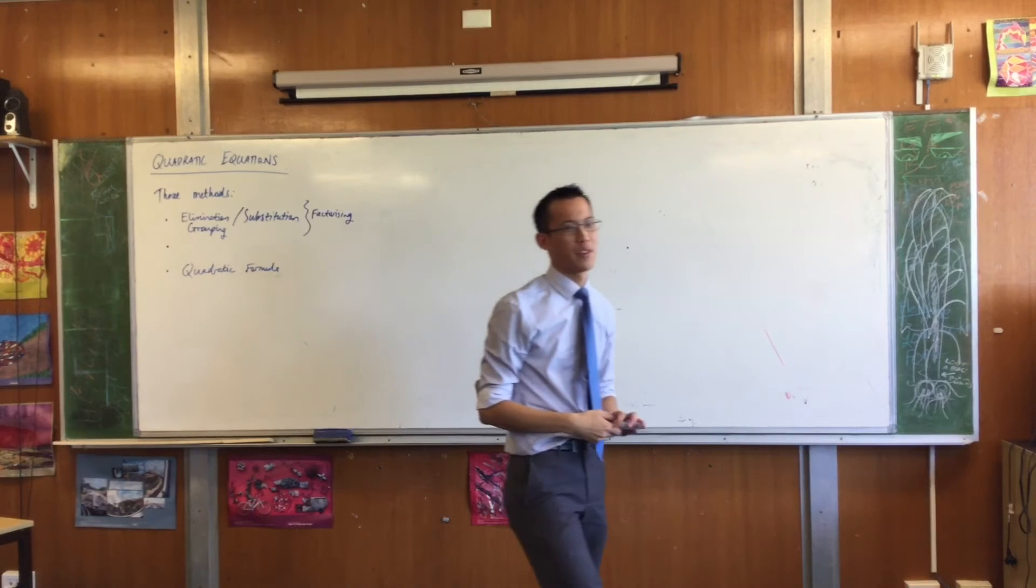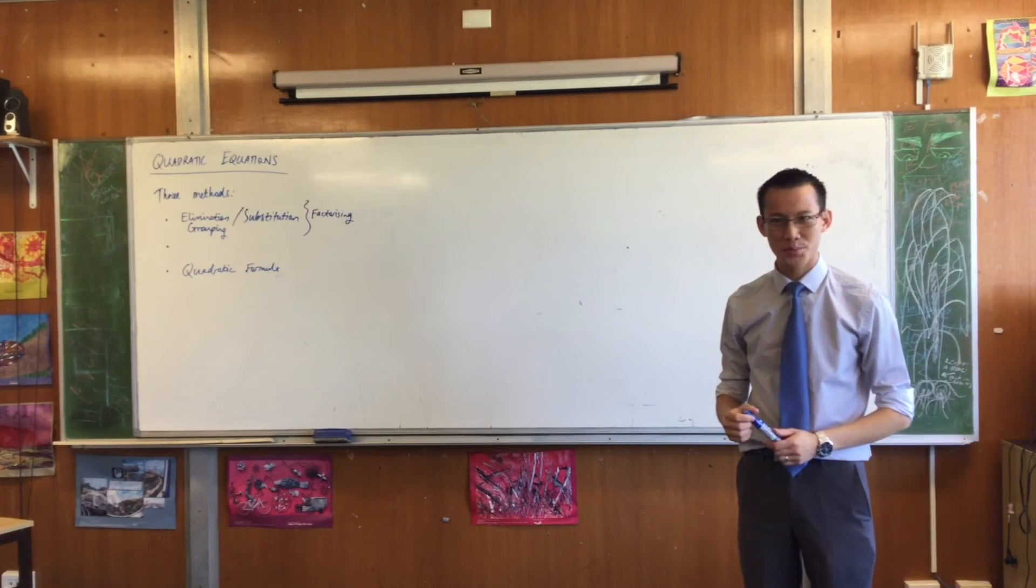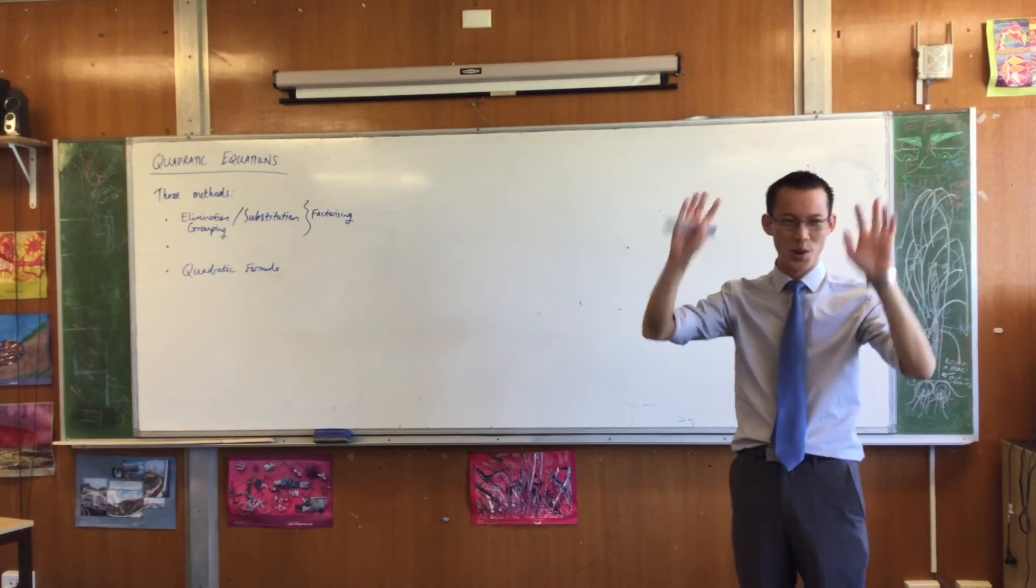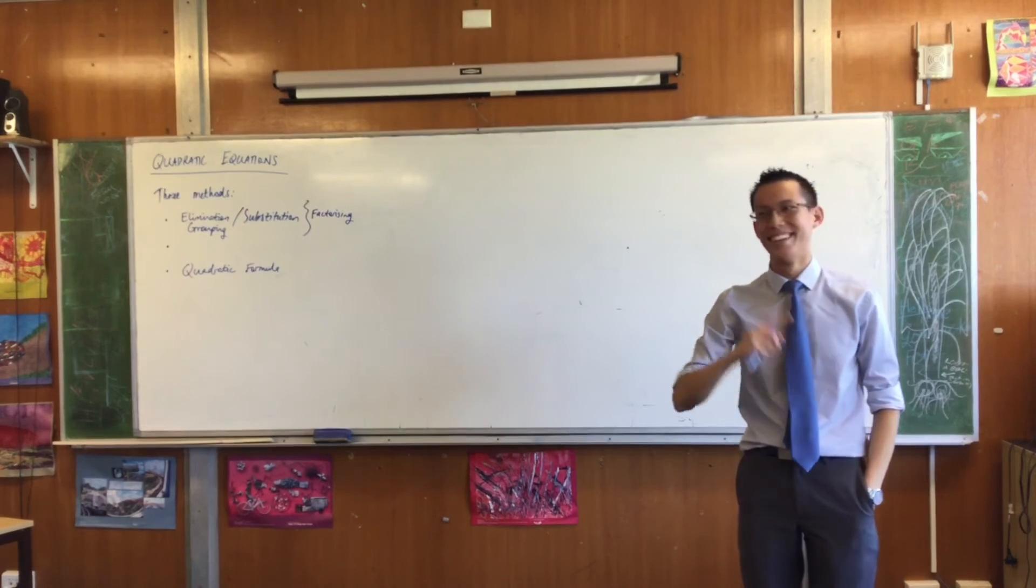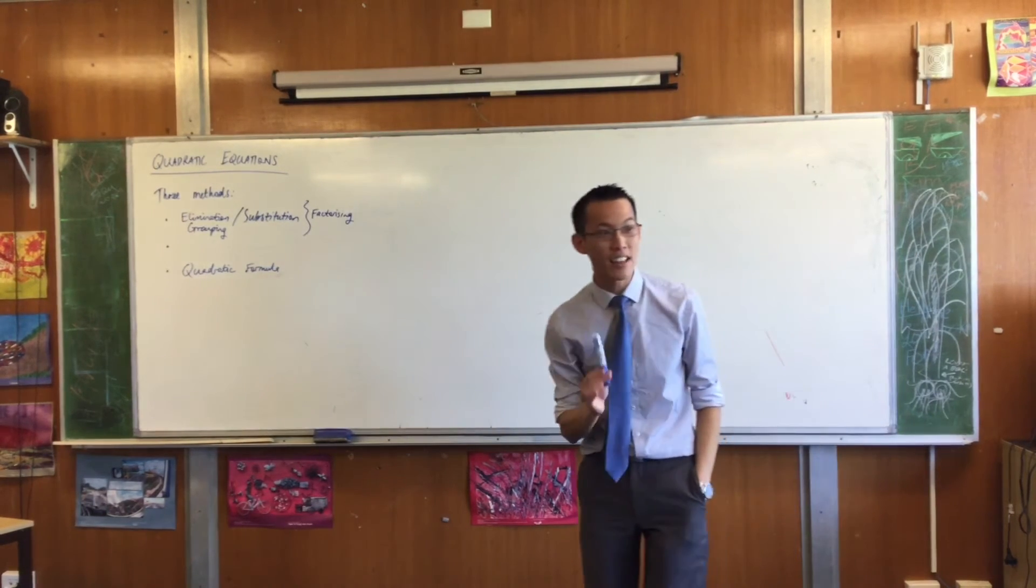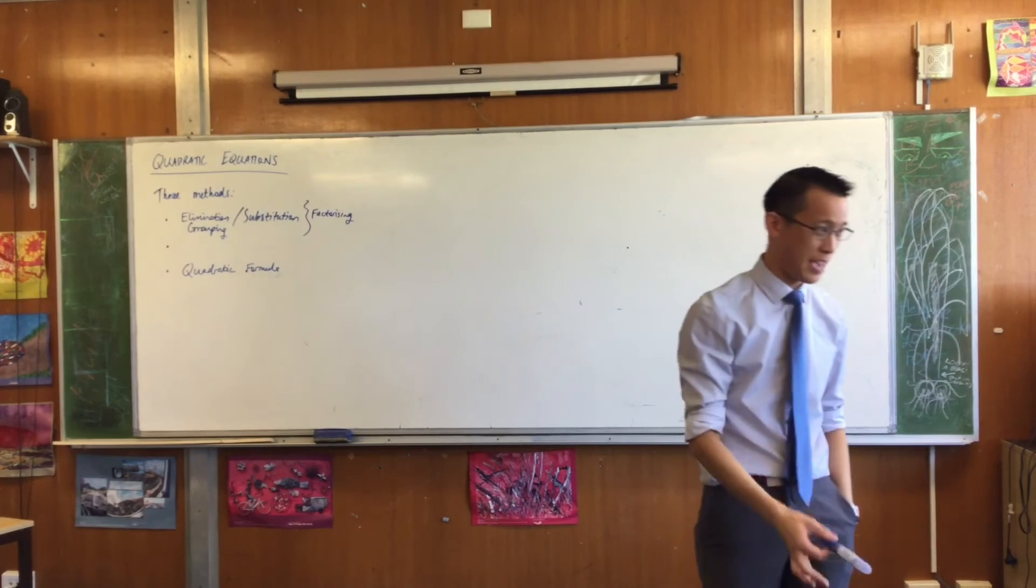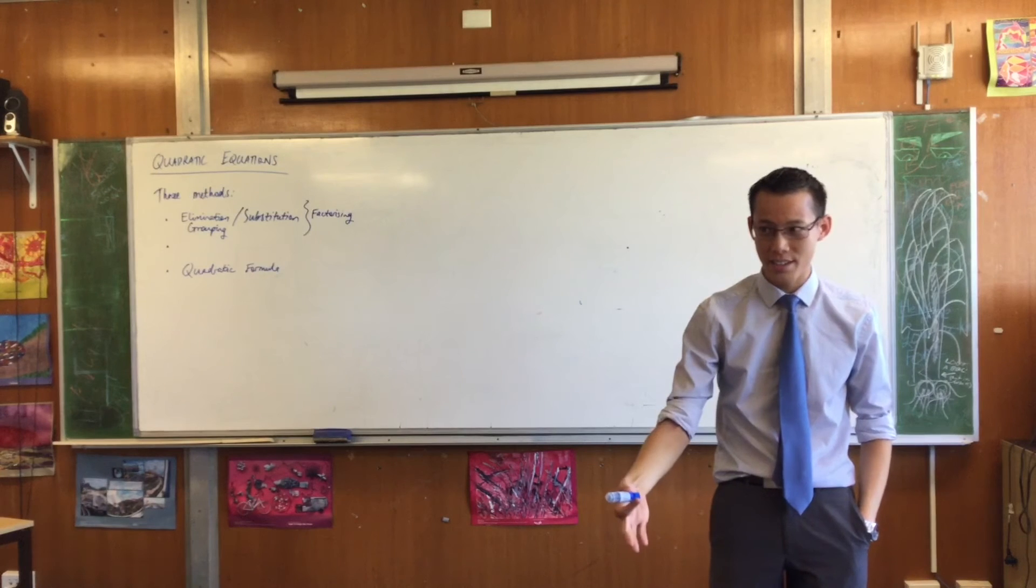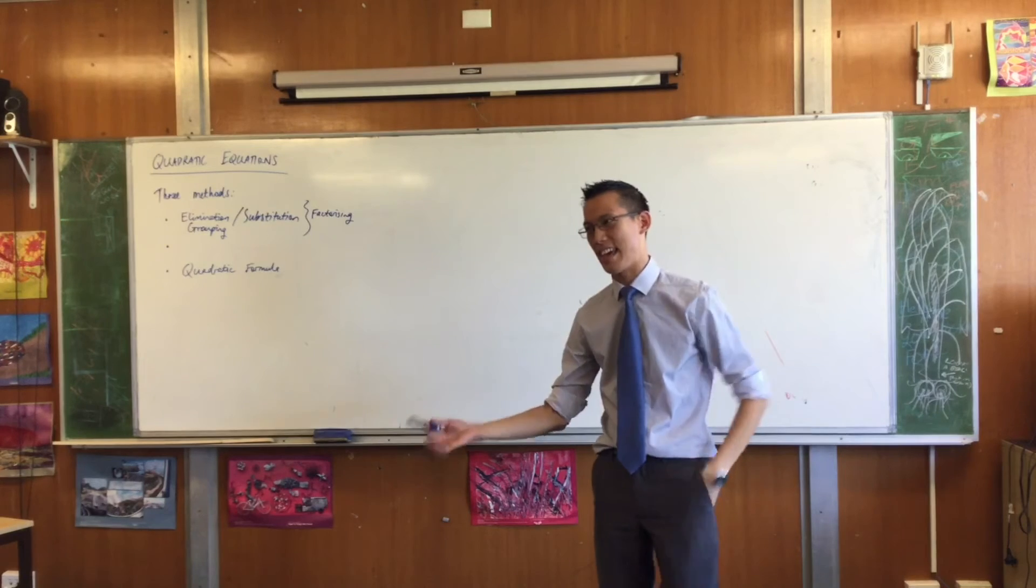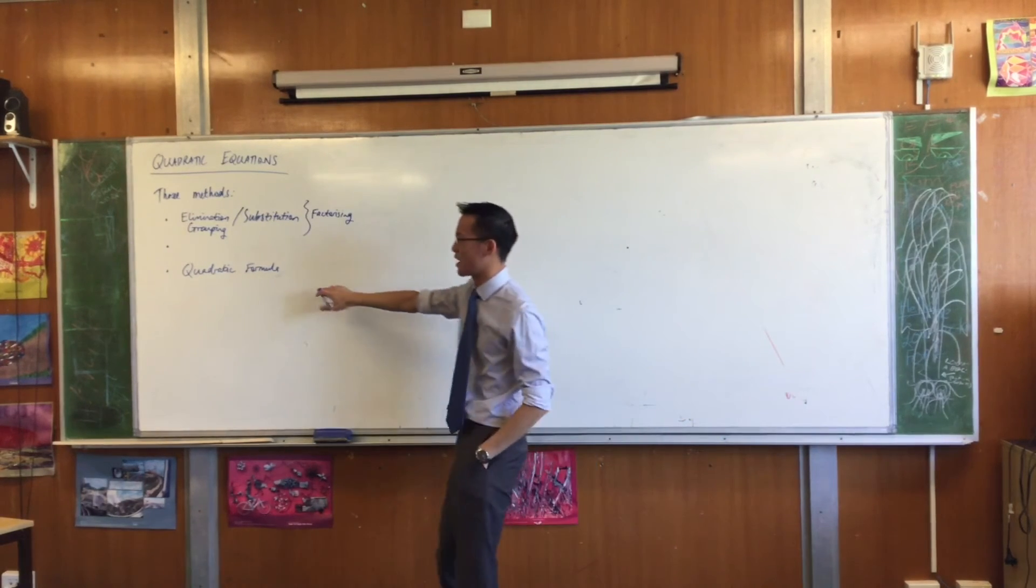By now, I wonder if we can recite it. X equals minus b, plus or minus... Stop, stop. That was awful. Let's try again together. Count to three this time. Are you ready? One, two, three. Minus b, plus or minus the square root of b squared minus 4ac, all over 2a. So good. You know the quadratic formula.